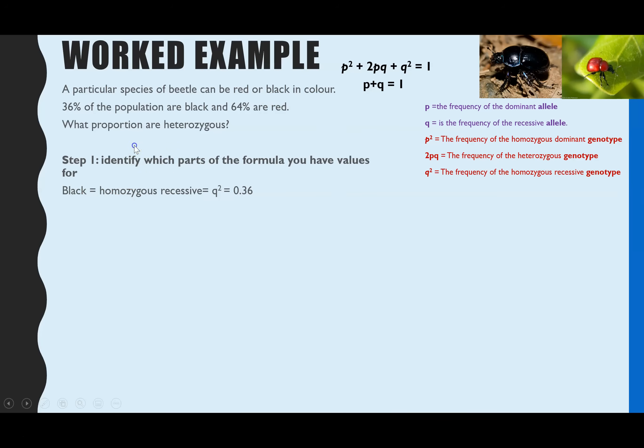Black, as I just said, is recessive. So that means the homozygous recessive genotype, which is Q squared, is 0.36. Red is the dominant phenotype, but there are two genotypes which would give a red beetle, and that would be either heterozygous or homozygous dominant. So that means 64% are P squared plus 2PQ, and I've just converted that to the decimal.